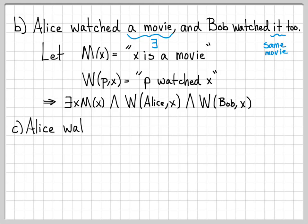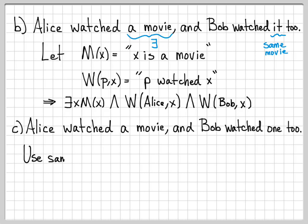Let's look at a slight variation of this sentence. Alice watched a movie, and Bob watched a movie, or Bob watched one, too. So very similar start to the sentence. The difference is this word here. It doesn't say that Bob watched it. It says that Bob watched one. So using the same definitions as last time, the M of X and W of P comma X, we can write down a logical expression.